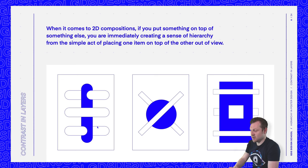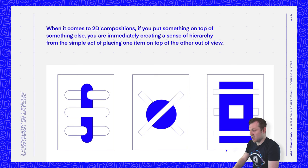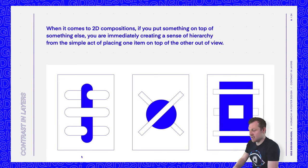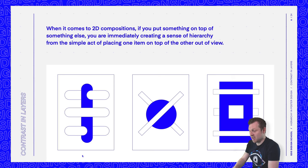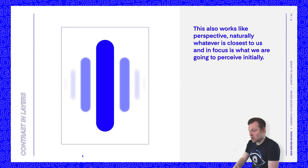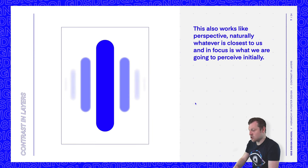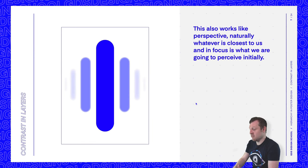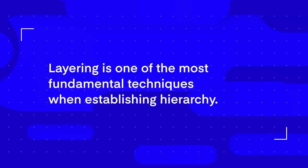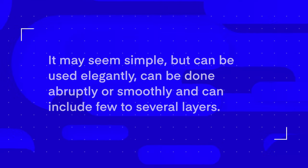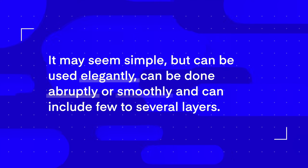When it comes to 2D composition, if you put something on top of something else, you are immediately creating a sense of hierarchy from the simple act of placing one item on top of the other. This also works like perspective — naturally, whatever is closest to us and in focus is what we are going to perceive initially. Layering is one of the most fundamental techniques when establishing hierarchy. It may seem simple, but can be used elegantly, done abruptly or smoothly, and can include few to several layers.